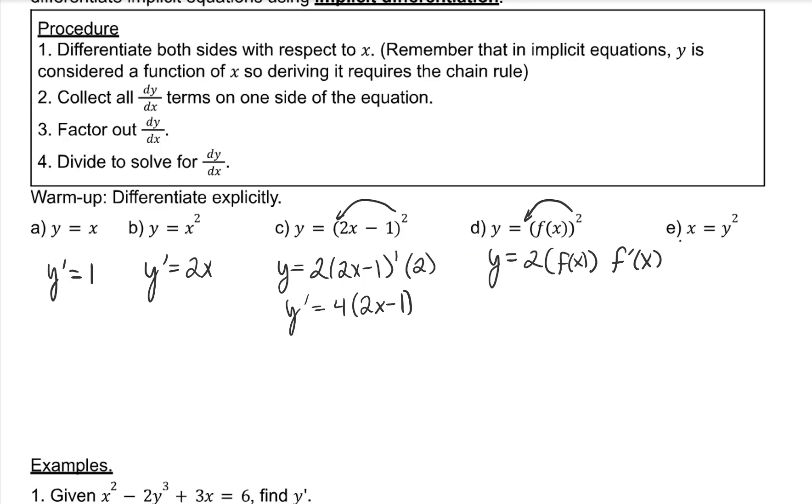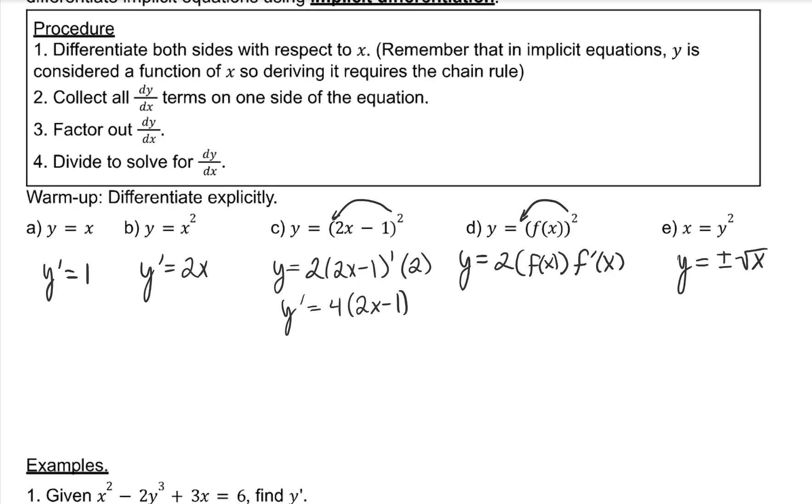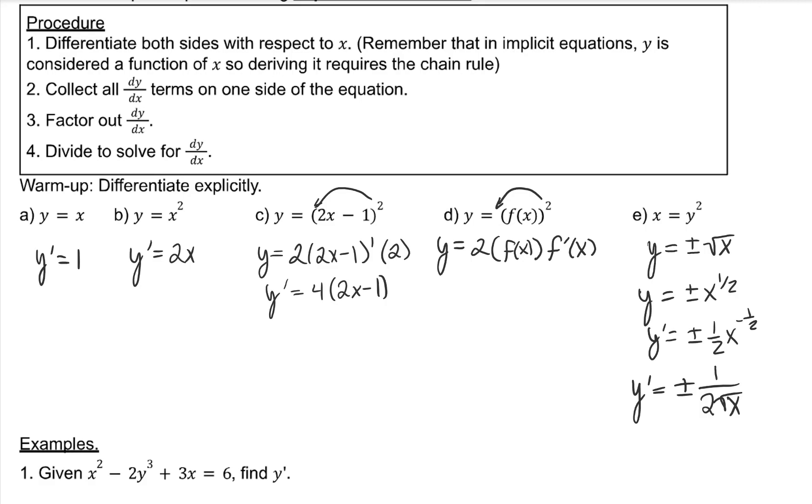x equals y squared. This is not an explicit equation. So can we differentiate it explicitly? Yes, we can solve for y. Square root both sides, and you'll get y is equal to plus or minus the square root of x. If you notice, x equals y squared is a sideways parabola, so a positive root function and a negative root function would give you that sideways parabola. In order to derive, let's rewrite it as a power. Pop down, power down. That's our explicit derivative.